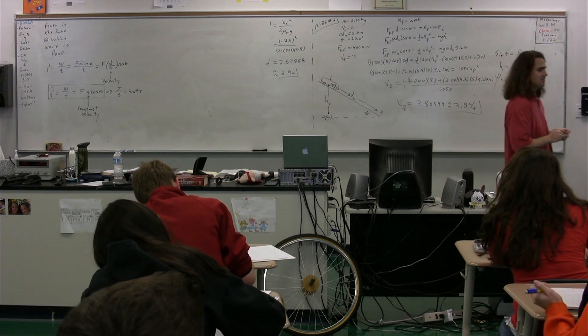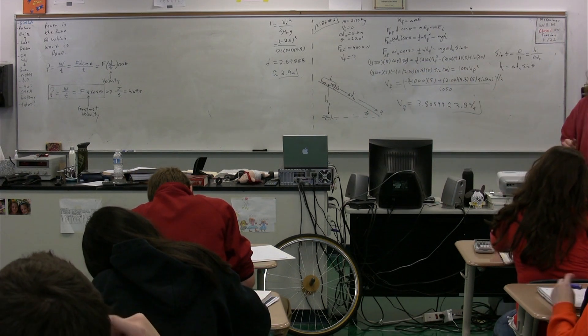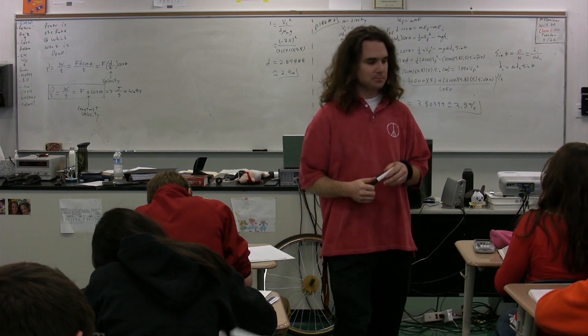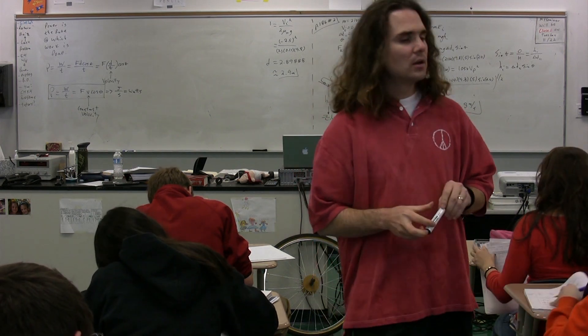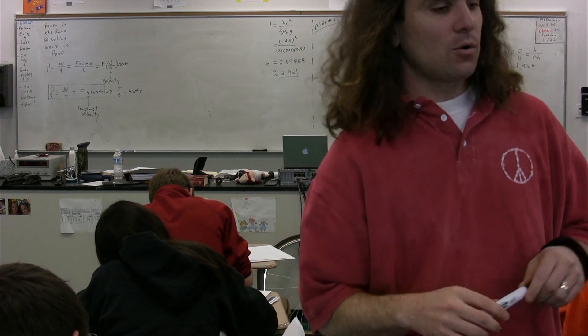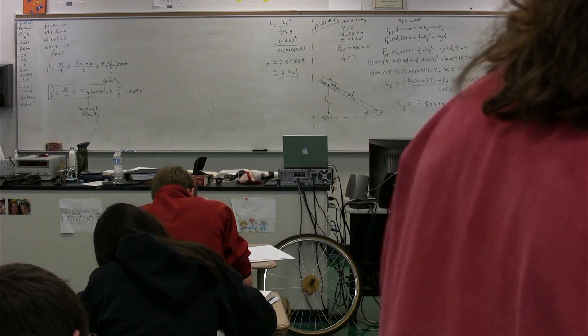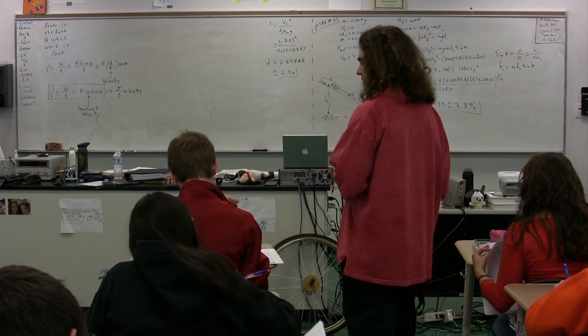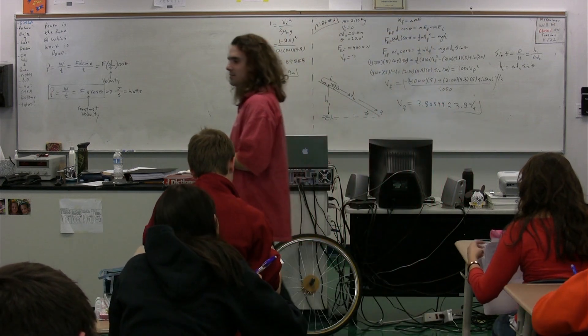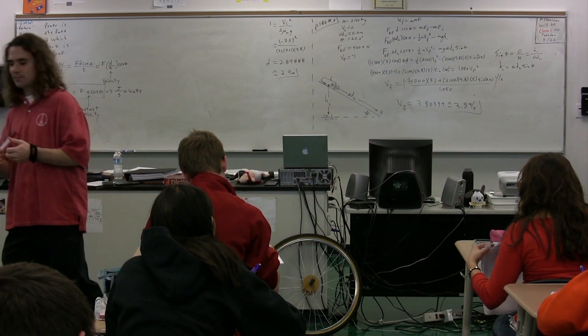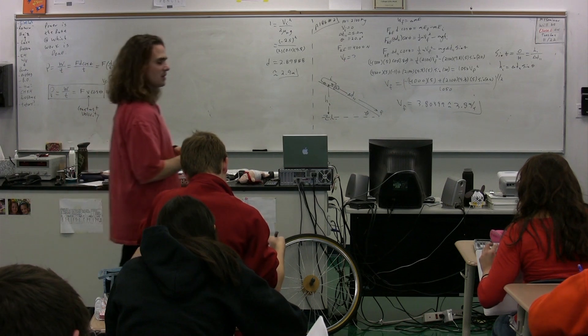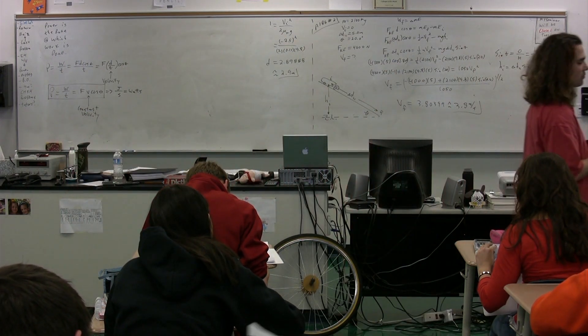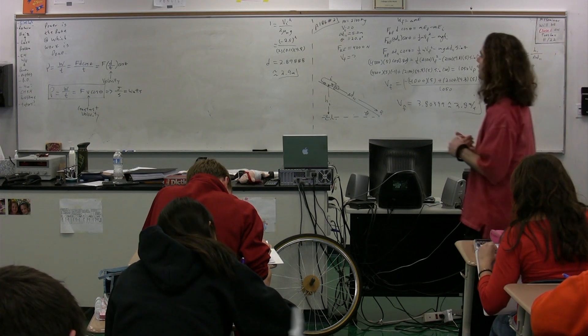This is the only thing we have to add to our table of friends today. So if you could please get out your table of friends and add power to your table of friends. Power, the symbol is a capital P. The dimensions are joules per second. Those are watts. So it's watts and joules per second. And then the equation is the one I just listed on the board. Power equals work over time. It's also equal to force times velocity times the cosine of theta.